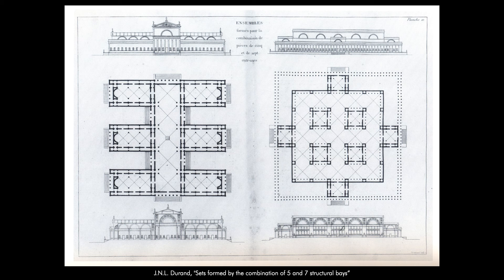The origin of this parallel block scheme is difficult to locate, and it may not even be important to do so, but it already appears in the teaching of Jean-Nicolas-Louis de Rhin in the beginning of the 19th century, when referring to the combinations of five and seven bays, which are longitudinal space strips.